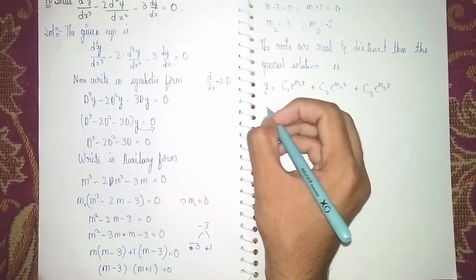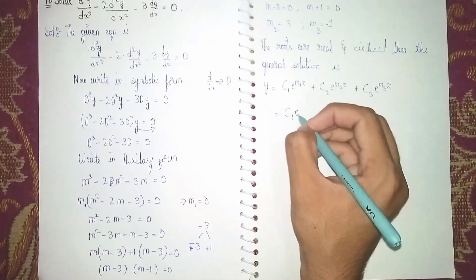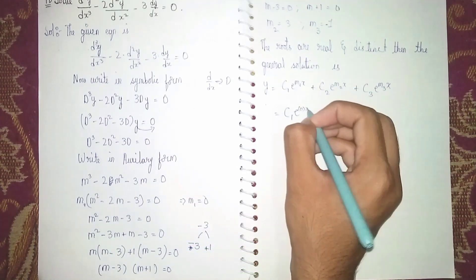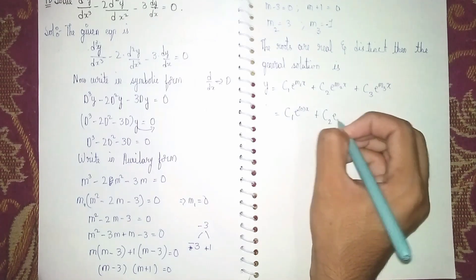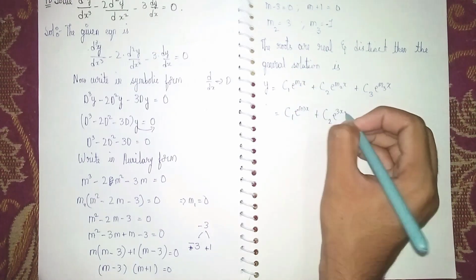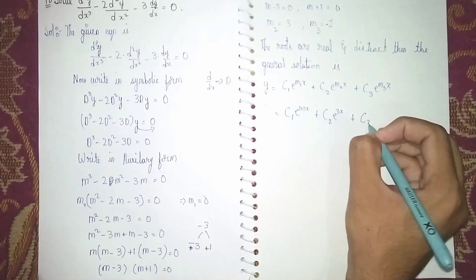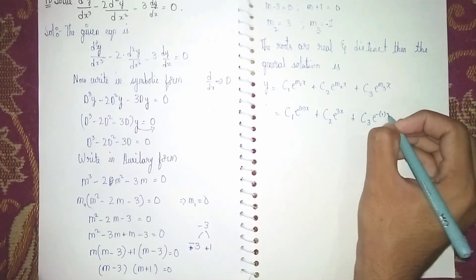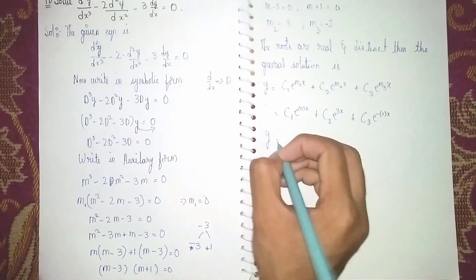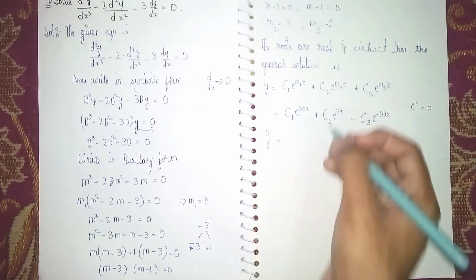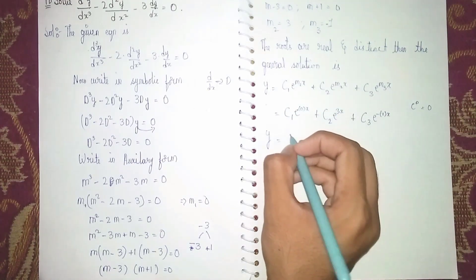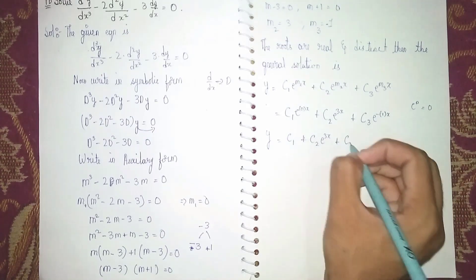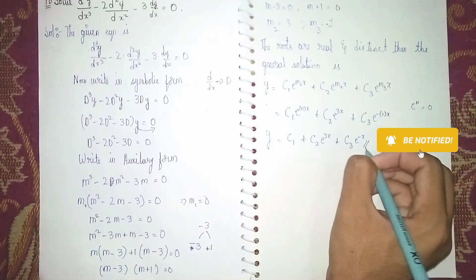Substituting the values: m₁ is 0, so e^(0·x) equals 1, giving c₁. m₂ is 3, giving c₂e^(3x). m₃ is minus 1, giving c₃e^(−x). Therefore, the final answer is y equals c₁ plus c₂e^(3x) plus c₃e^(−x). Thanks for watching.